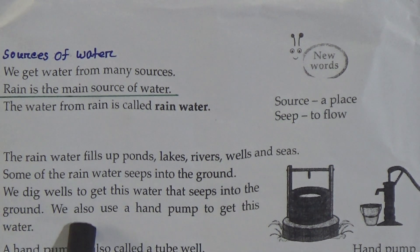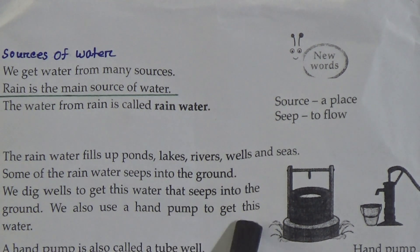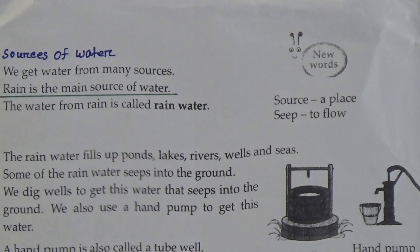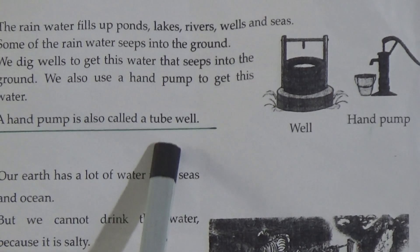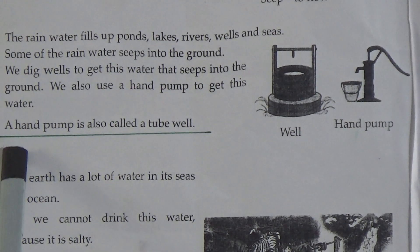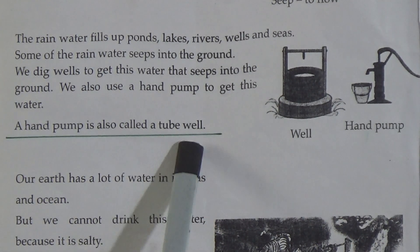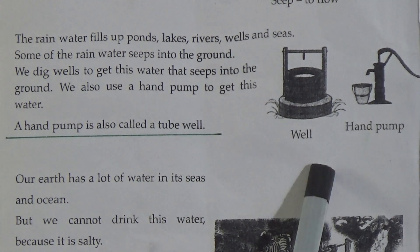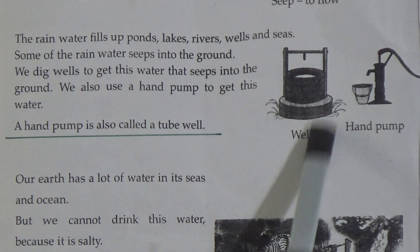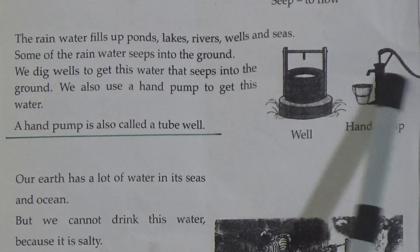We dig wells to get water that seeps into the ground. We also use a hand pump to get this water. A hand pump is also called a tube well — underline this line. Look at the picture: this picture shows a well, and this picture shows a hand pump.